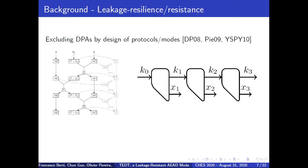So with this motivation, the community seeks for another method to exclude DPA by the design of the protocols or modes. We present two examples here. The left is a so-called leakage-resilient PRG at Eurocrypt 2008. The right is a PRG at CCS 2010. The basic idea is to have a frequently updated state to avoid a single state processing multiple data and leaking many traces collected by DPA analysis. So the possibility of DPA is erased at the level of the mode design.